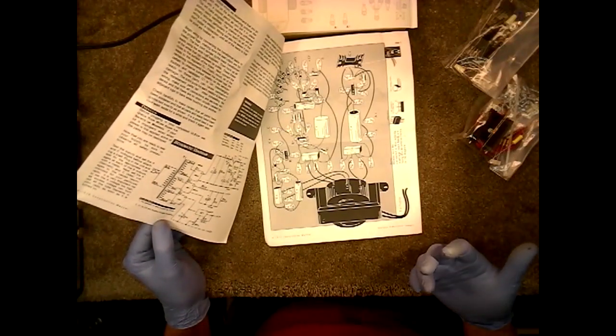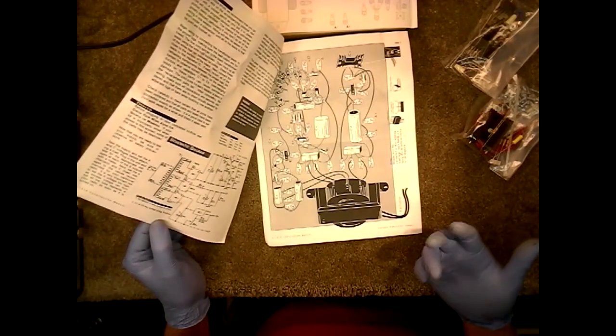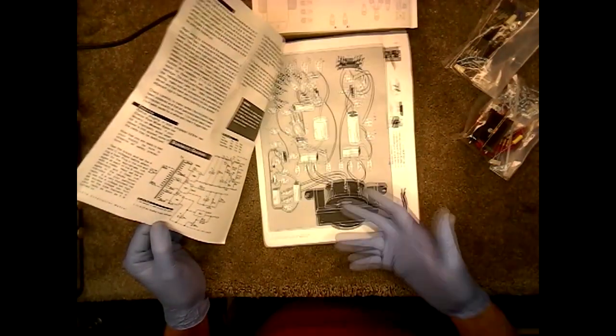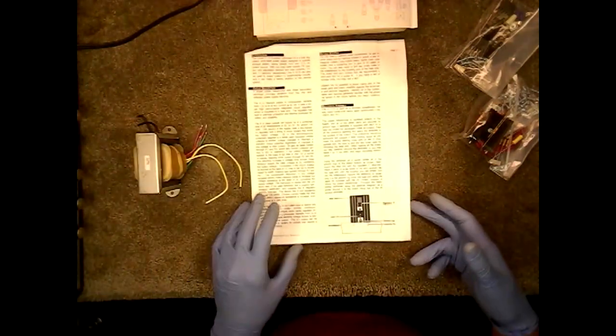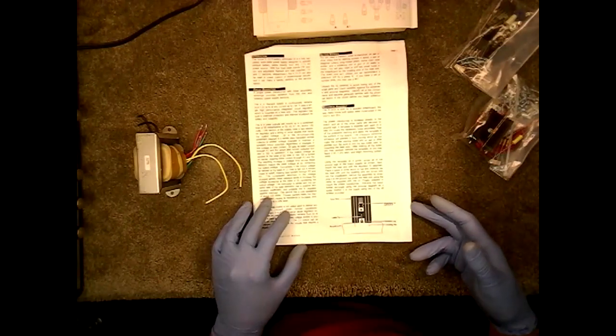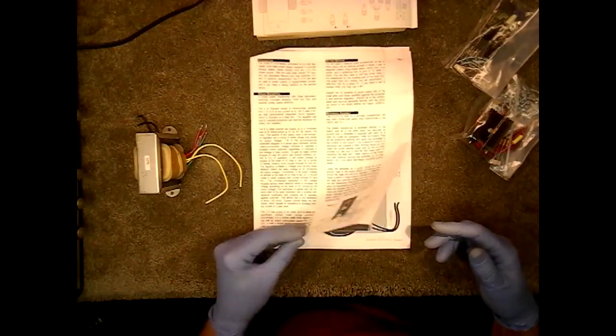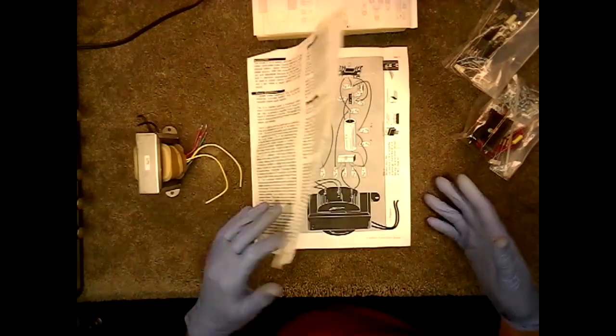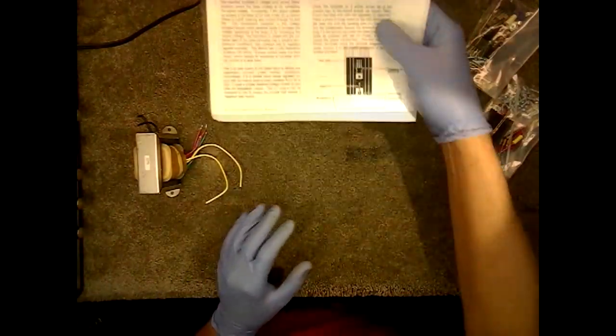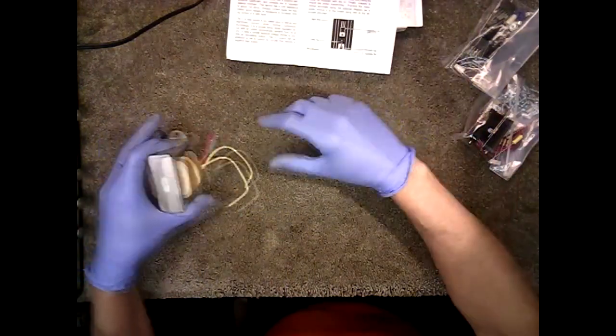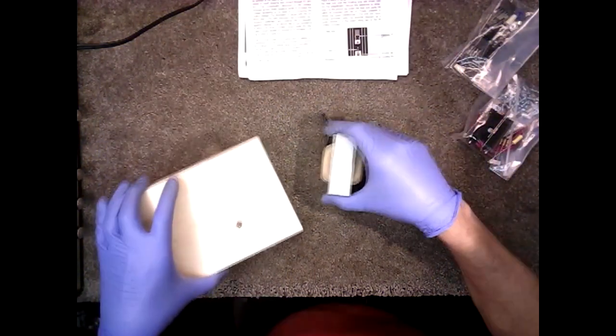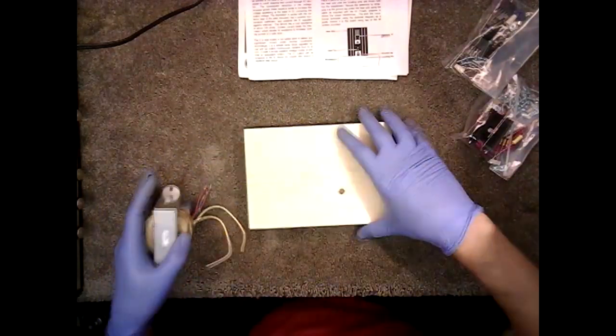The kit is a little pricey. It's somewhere around $70 or so, plus shipping. If you were to buy all these components, the transformer alone would probably cost you close to $100. And then the regulators and all are not cheap. So, by the time you do that, build one yourself, you're paying a lot more than just getting the kit.